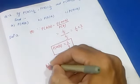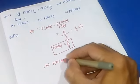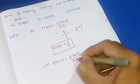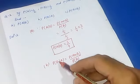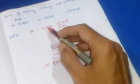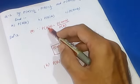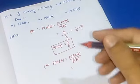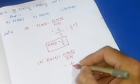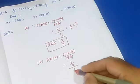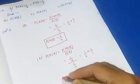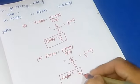Now let's go to part B. We will find probability of B given A. Probability of B given A equals probability of A intersection B divided by probability of A. Why? Because here the event A has already happened, so event A becomes the sample space for event B. We substitute values: probability of A intersection B is 1 by 4, divided by probability of A which is 1 by 2. This gives us 1 by 4 into 2 by 1, which equals 1 by 2. So probability of B given A is equal to 1 by 2.